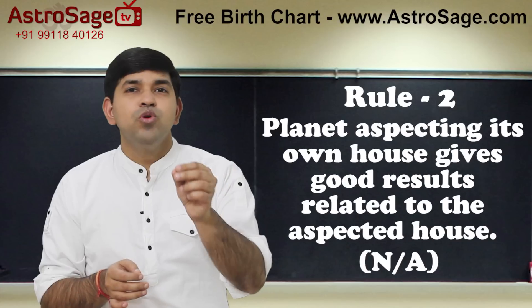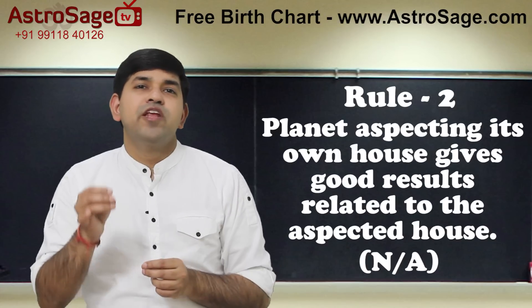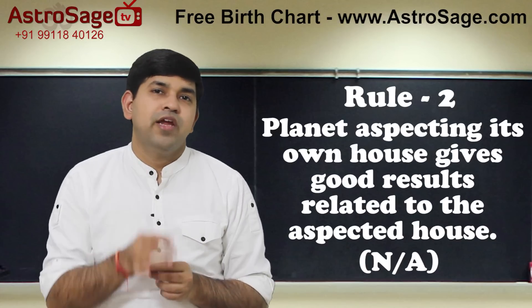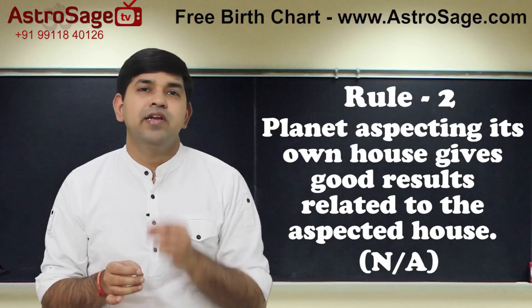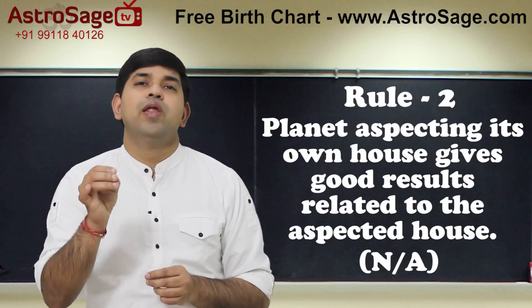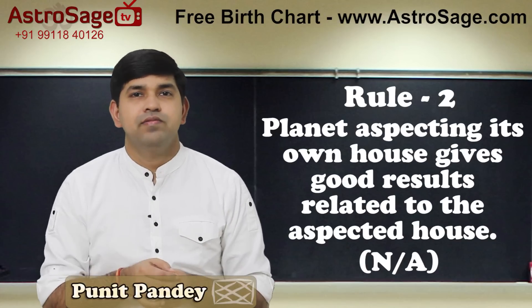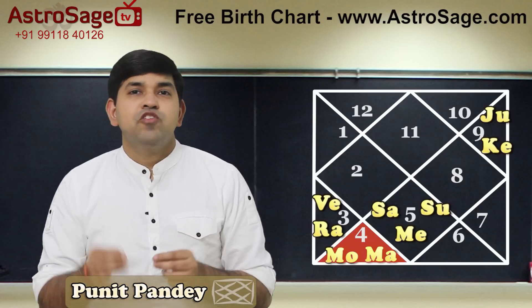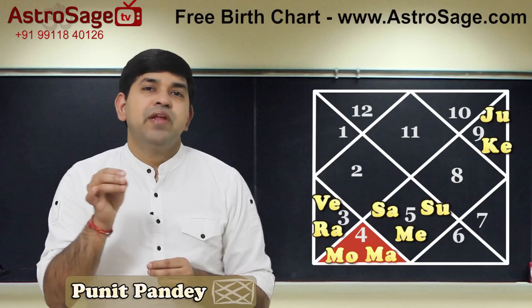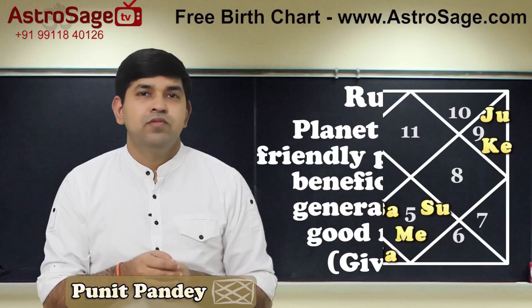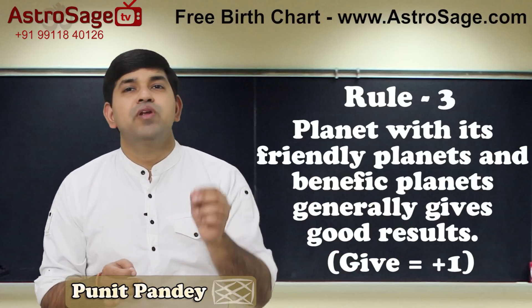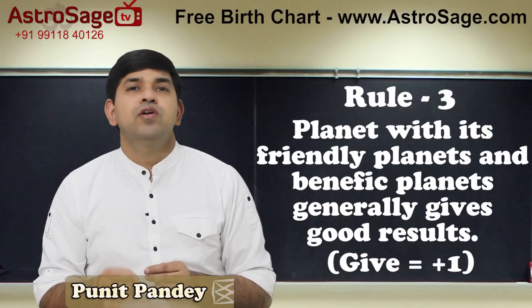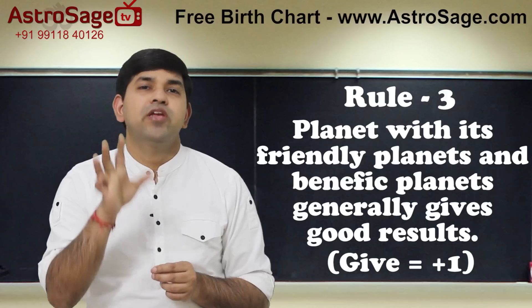Rule number 2 is related to the strength of a house and not of a planet, so it is not applicable here. Mars is with its friendly planet Moon, so let us give plus 1 to rule number 3.